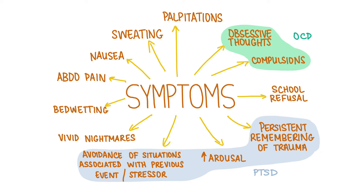OCD, which is characterized by obsessive thoughts and compulsive actions, can occur in children. It can be harder to elicit obsessive thoughts from the history in children than in adults. Post-traumatic stress disorder can occur in children and it is characterized by the persistent remembering or reliving of trauma, avoidance of similar situations associated with the previous event or stressor, and increased arousal.